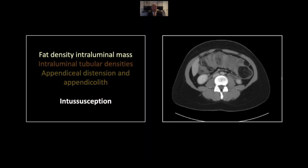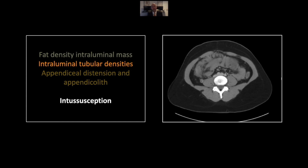We'll begin with a case of intussusception. Of course, in adults, intussusception usually is accompanied by a lead point lesion, and this one is a classic. A lobulated fat density here in the colon, which represents an intraluminal lipoma. In the next cut down, you can actually see tubular structures within the lumen of the colon, which represent intussuscepted small bowel and actually appendix alongside it.